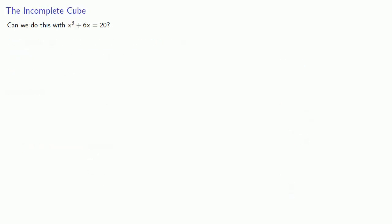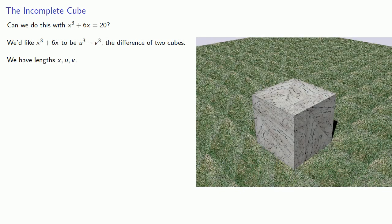Can we do this with x³ + 6x = 20? And our goal is we'd like x³ + 6x to be u³ - v³, the difference of two cubes. So we have lengths x, u, and v.